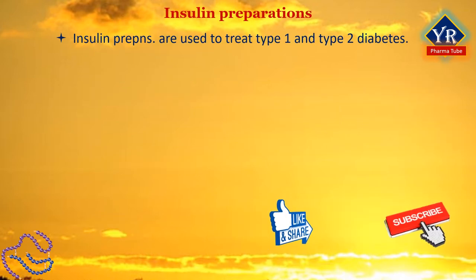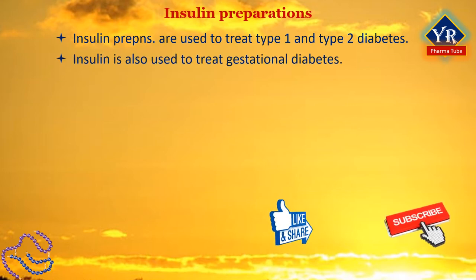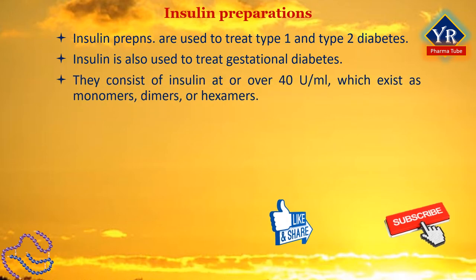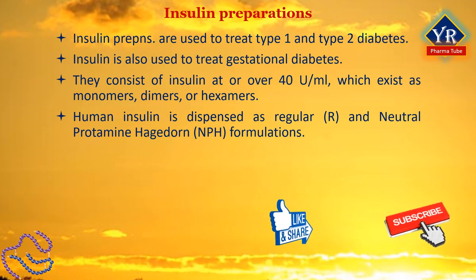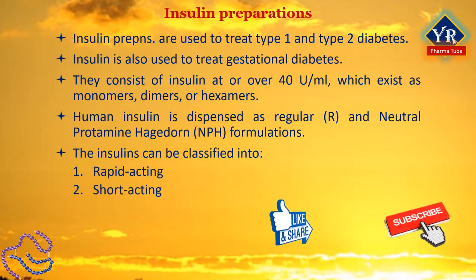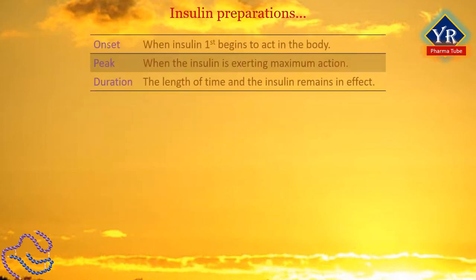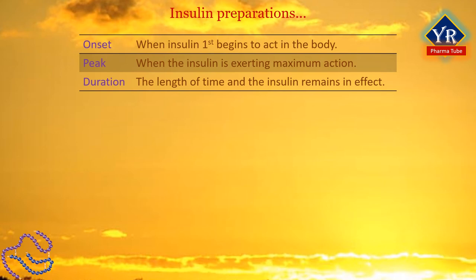Insulin preparations are used to treat all patients with type 1 diabetes and about one third of patients with type 2 diabetes. Insulin is also used to treat pregnant women with gestational diabetes. For many years, therapeutic insulin was obtained from pork and beef pancreas. Insulin preparations can be classified into rapid acting, short acting, intermediate acting or long-acting insulins following subcutaneous administration. Onset, peak and duration are the three properties of insulin that are of clinical importance. Onset is when insulin first begins to act in the body.